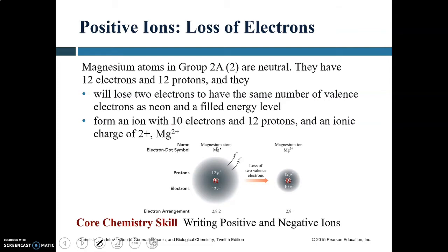Magnesium in group 2A: atoms of magnesium are neutral with 12 electrons and 12 protons. When they lose two electrons, they have the same number of valence electrons as the closest noble gas, neon, with eight electrons on the outer shell. So magnesium forms an ion with 10 electrons and 12 protons, giving it a charge of +2.